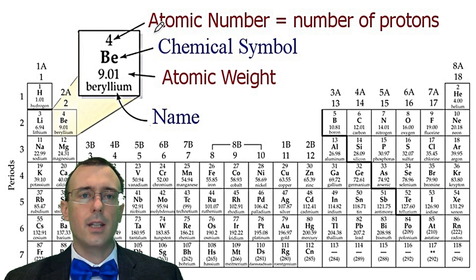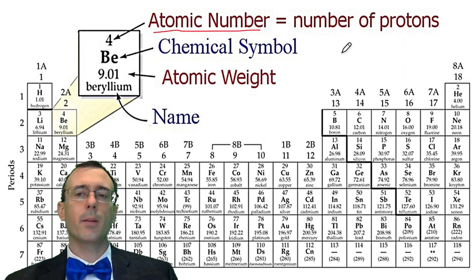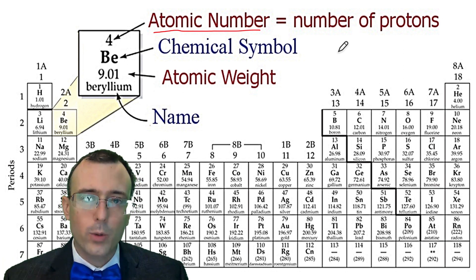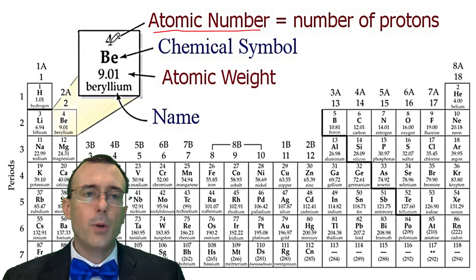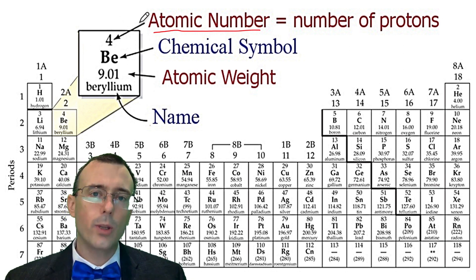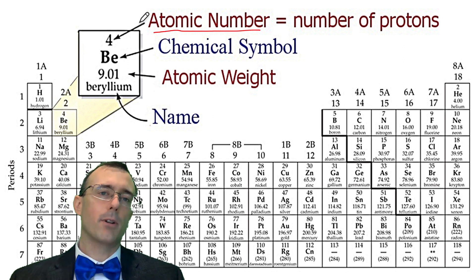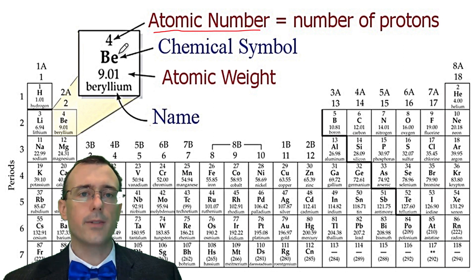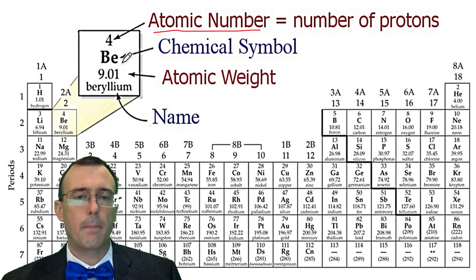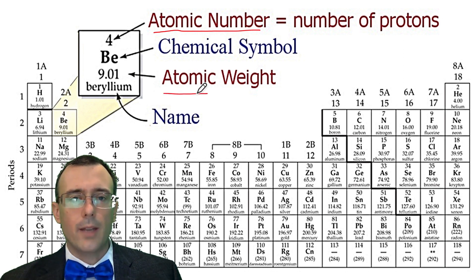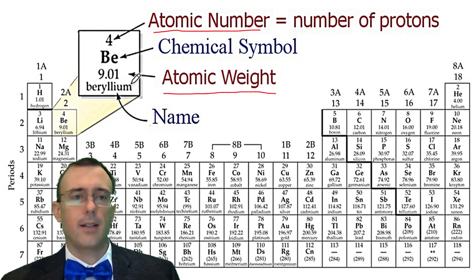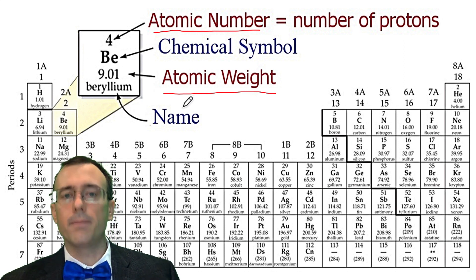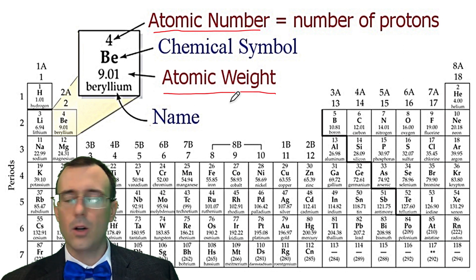The top number here is the atomic number, which is the number of protons, and that's important because that defines the element. The number of protons defines the element. So if you have four protons in one particular atom, you know that thing is beryllium. The number of neutrons and electrons can vary, but if something has four protons, it must be beryllium. The other number is the atomic weight, and that's what we're going to focus on today. The atomic weight, as you can see, is not a whole number — unlike the mass number.